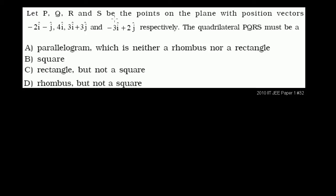Let P, Q, R, and S be the points on the plane with position vectors -2i - j, 4i, 3i + 3j, and -3i + 2j respectively. The quadrilateral PQRS must be... So let's just graph each of these position vectors, or graph the points that they're specifying. So let me draw my coordinate axes right over here.